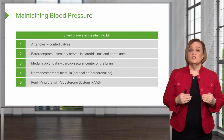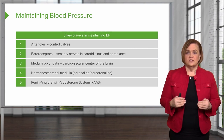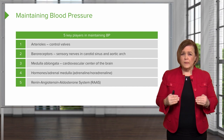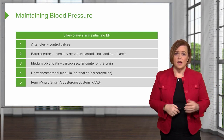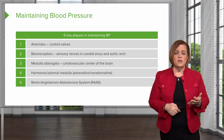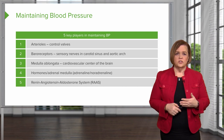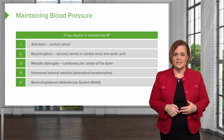Finally, number five: you've got the renin-angiotensin-aldosterone system. We're going to dig deeper into that in an upcoming part of the video — we'll call it the RAS for short, because some of these mouthfuls take a lot of time just to say.